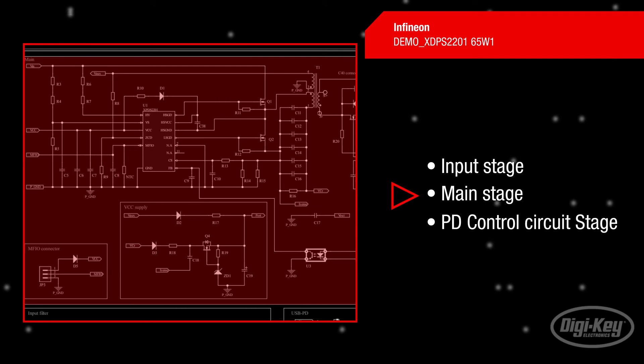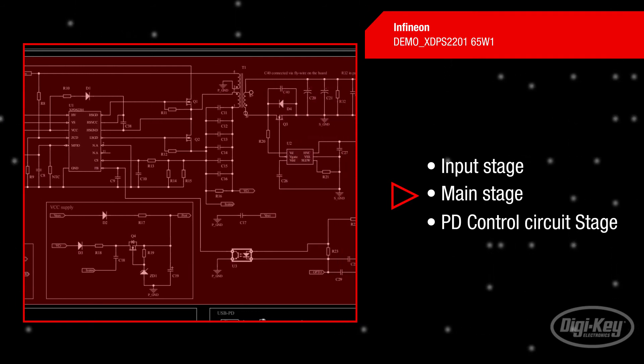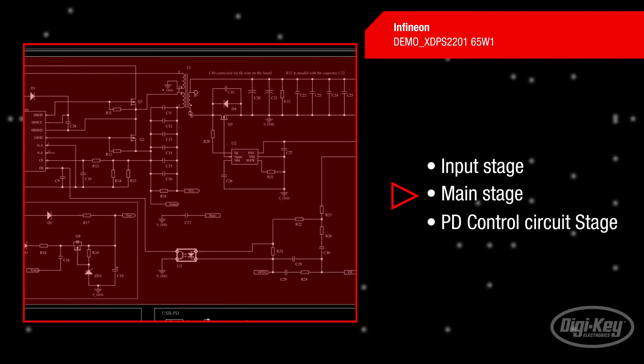The main stage contains two power switches, transformer, and resonant capacitor with three sources to supply the controller IC.